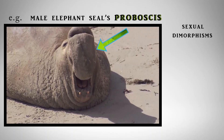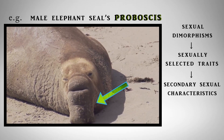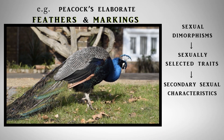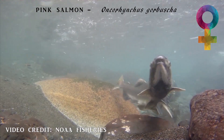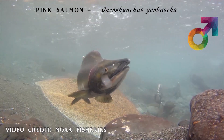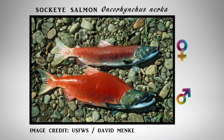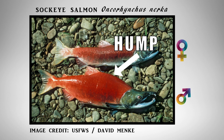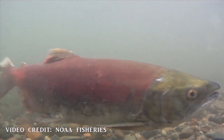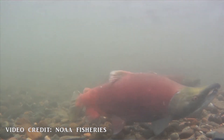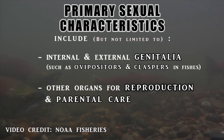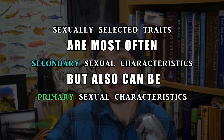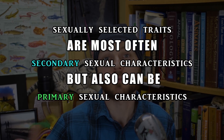These sexually selected traits can be chemical, behavioral, morphological, and so much more. There are many other sexual dimorphisms that act as sexually selected traits, which are also known as secondary sexual characteristics, that are usually capable of being developed during sexual maturity. In fishes, these traits often are only exhibited or more pronounced during mating and spawning rituals — like in many salmonids, where males develop a kype or hook snout, a hump, and brighter colorations before and during spawning. Primary sexual characteristics are organs such as ovipositors and genitalia and other organs used for parental care. Sometimes a sexually selected trait can be both a primary and secondary sexual characteristic, but we'll explore that more later.